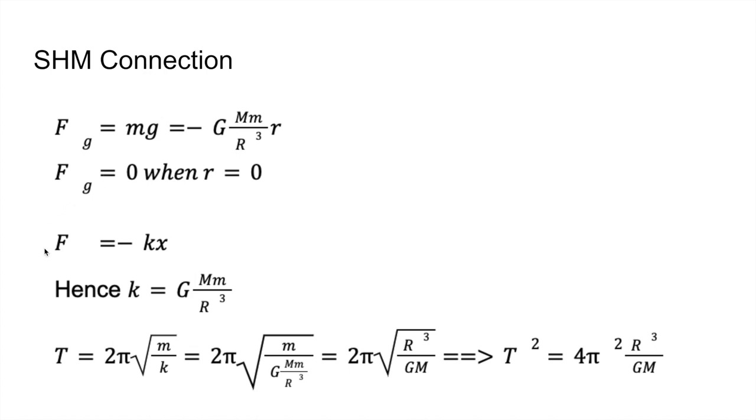We also know that from simple harmonic motion, f is equal to negative kx. And so you can obviously see the connection because x is the displacement from the equilibrium, and r is the displacement from the equilibrium. So we are able to see that throughout the motion, the force that acts on the ball is proportional with its displacement from the center of the Earth. Hence, k is equal to g times mm divided by r cubed.